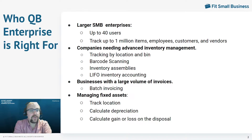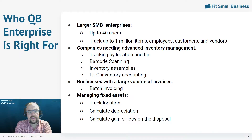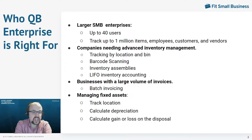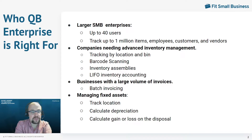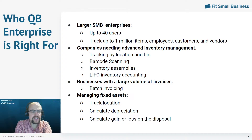QuickBooks Enterprise has a fixed asset manager built in, which is very unusual for small business accounting software. With this fixed asset manager, not only can you calculate depreciation, you can calculate your gain or loss on the disposal of assets, and you can track locations. You can track multiple types of depreciation — depreciate using one method for taxes, another for book, another for alternative minimum tax. There are about five different methods you can use all at the same time, making it a very powerful fixed asset manager.